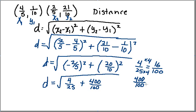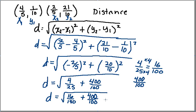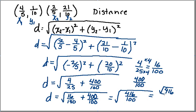Down here I've got four hundred over a hundred — I've already got my hundred in the denominator, so I don't have to do anything there. So my distance is going to be equal to the square root of sixteen over a hundred plus four hundred over a hundred, which equals the square root of four hundred sixteen over a hundred. I can break this down as the square root of the top over the square root of the bottom. The square root of a hundred is ten, so my denominator is ten.